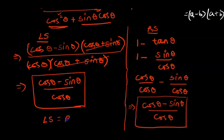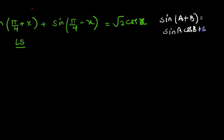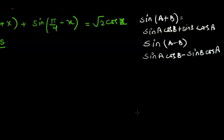Let's take up another example: prove that sine of pi by 4 plus x plus sine of pi by 4 minus x equals root 2 cos x. We'll simplify the left side first. We have sine of A plus B and sine of A minus B, so we use the compound angle formulas: sine A plus B equals sine A cos B plus sin B cos A; sine A minus B equals sine A cos B minus sine B cos A.